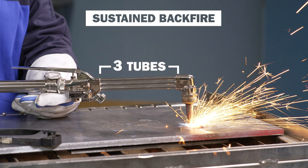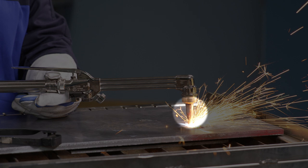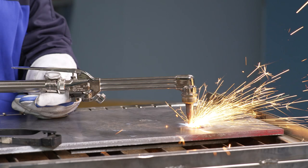This particular torch is designed with three tubes that keep the gases separated until they reach the tip. Gas mixing takes place only in the tip itself, so a sustained backfire is almost always isolated to the tip.